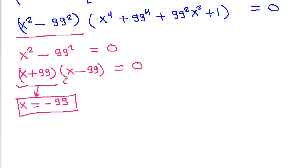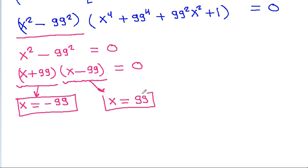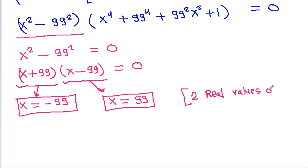And from x minus 99 equals 0 we get x equals 99, and from x plus 99 equals 0 we get x equals minus 99. So these are the two real values of x.